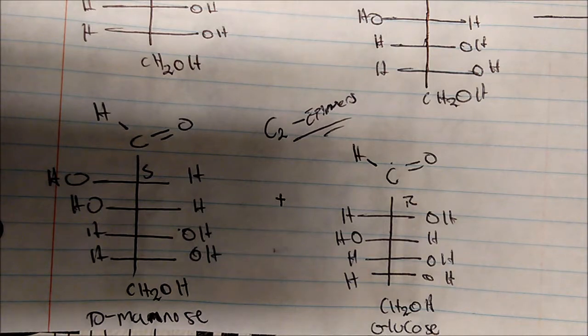When we take a sugar and put it in base, we get a mixture of products — that's why we typically don't run sugars in base. We just destroy it. This is called epimerization because we have multiple chirocenters but only one changes. Now let's talk about the enediol reaction, where we learn the structure of fructose.